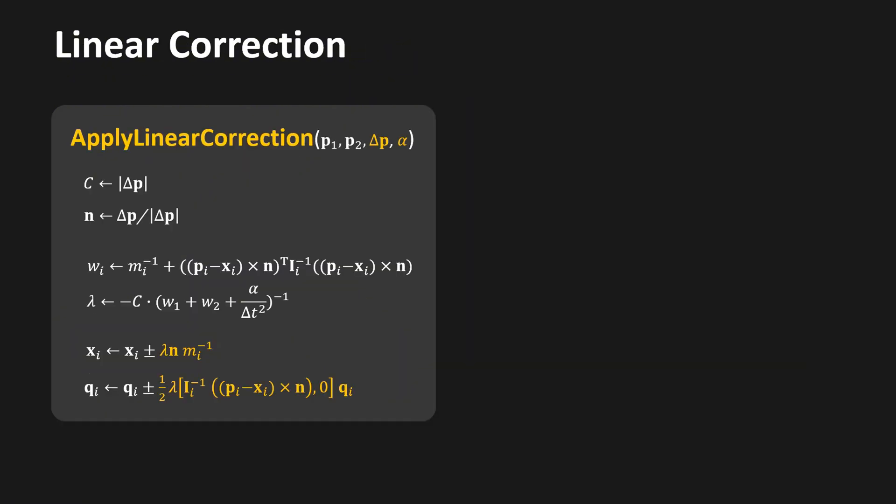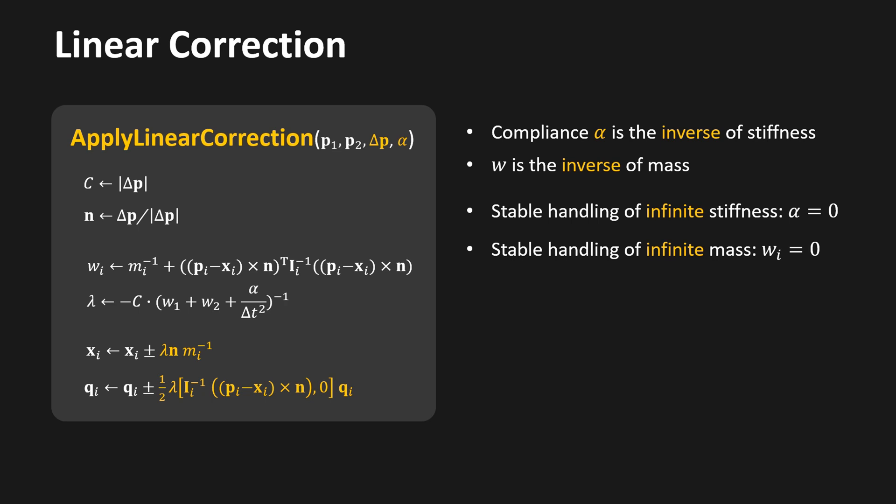Here you see the procedure to compute these corrections. It looks quite complicated, but you don't really need to understand these formulas — you will find the implementation in my code. The procedure takes as input the locations of the attachment points p1 and p2, a correction vector delta p, and the compliance alpha. The compliance alpha is the inverse of physical stiffness, and W is the inverse of mass. Working with inverses lets us handle infinite stiffness and infinite mass simply and stably. We can compute the force acting on the constraint as lambda times n divided by delta t squared.